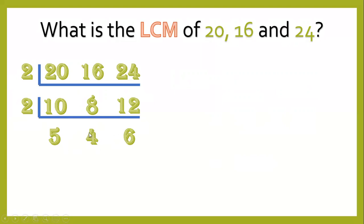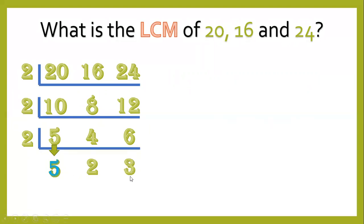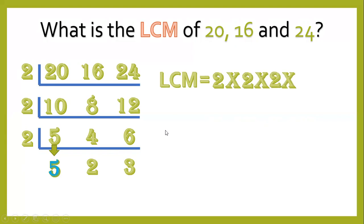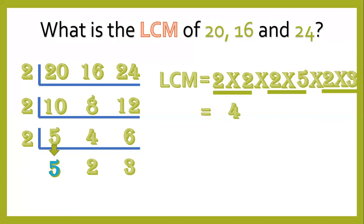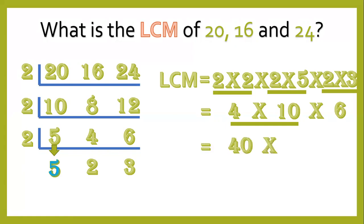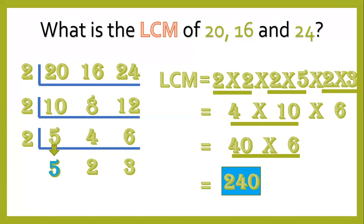We don't stop until there is still a common factor. 4 and 6 can still be divided by 2, but 5 cannot, so bring down 5. Divide 4 by 2 equals 2; 6 divided by 2 equals 3. So 5, 2, and 3 have no more common factor, so we stop here. LCM equals 2 times 2 times 2 times 5 times 2 times 3. 2 times 2 equals 4; 2 times 5 equals 10; 2 times 3 equals 6; 4 times 10 equals 40; 40 times 6 equals 240. So 240 is the final answer.